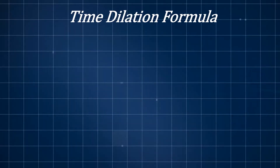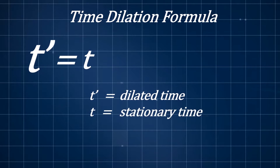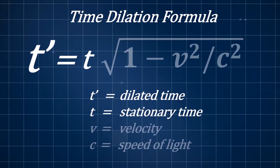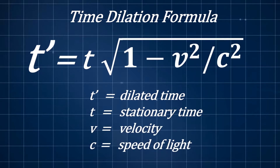Time dilation can be further explained by the formula: t prime is equal to t times the square root of 1 minus v squared all over c squared.